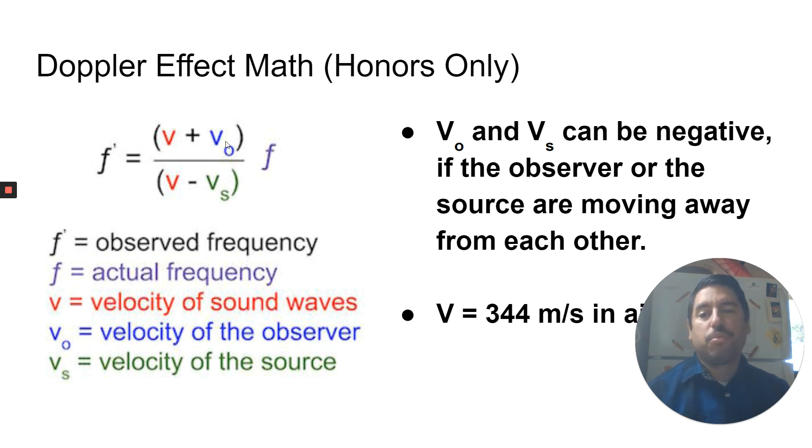So if the observer is moving away, this V O would be negative. So you'd actually have V minus V O, if the observer is moving away. If the source is moving away, then the V S here needs to be negative. So then you'd have V minus minus V S, which is V plus V S.